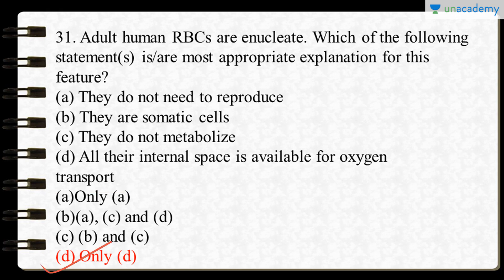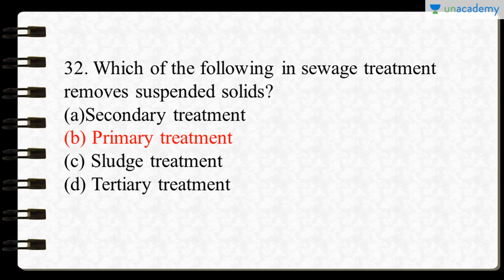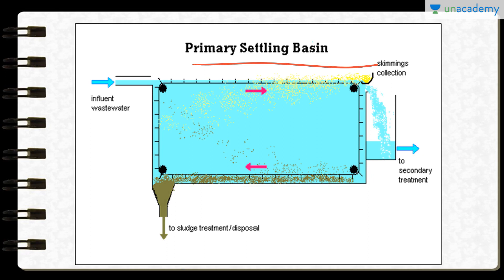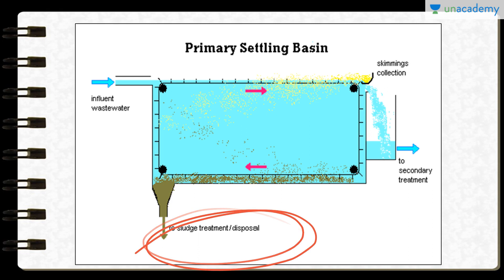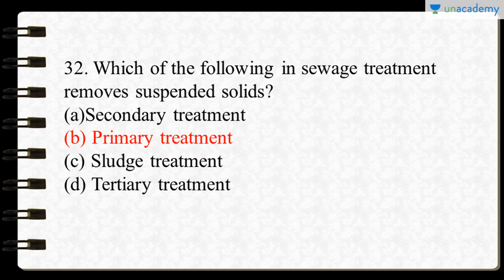Moving to the next question: which form of sewage treatment removes suspended solids? The primary settling basin is an example of primary sewage treatment, which is a physical process involving sequential filtration and sedimentation. Wastewater enters the primary settling basin, sand and soil sediment out, and the remaining water is transported to secondary treatment. Option B is correct.